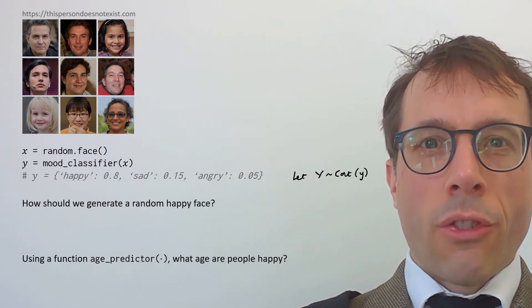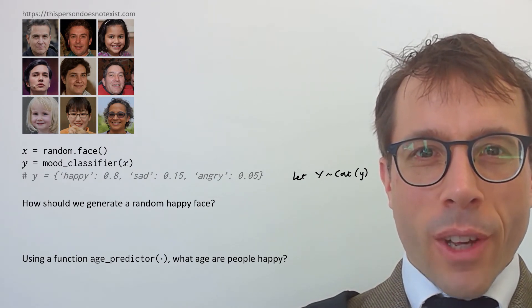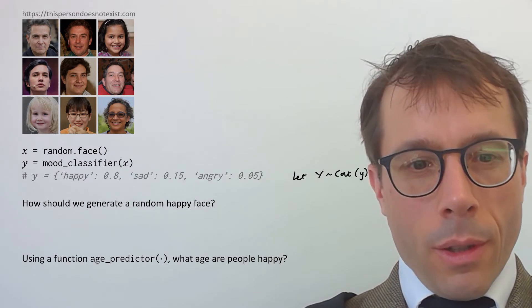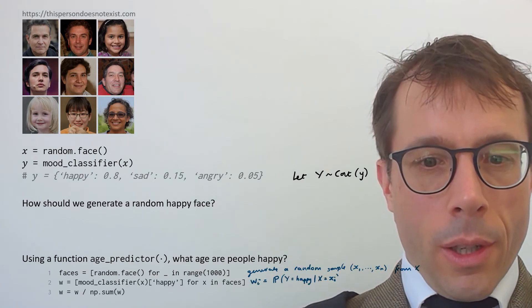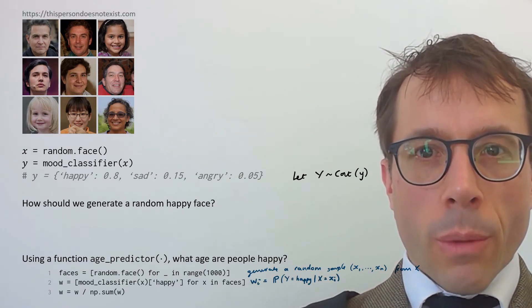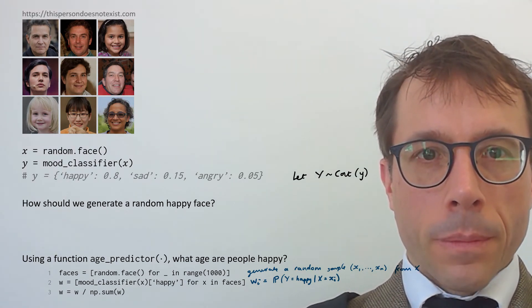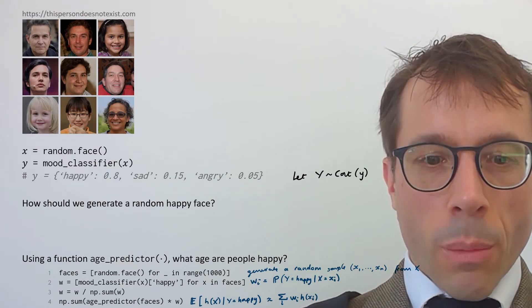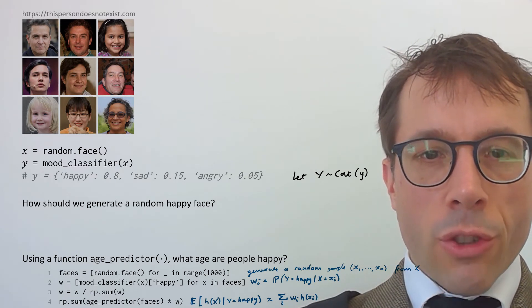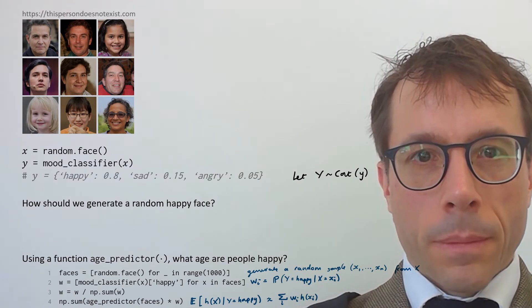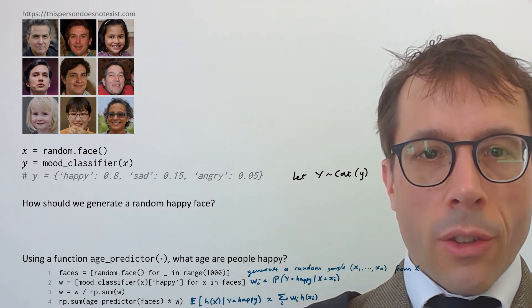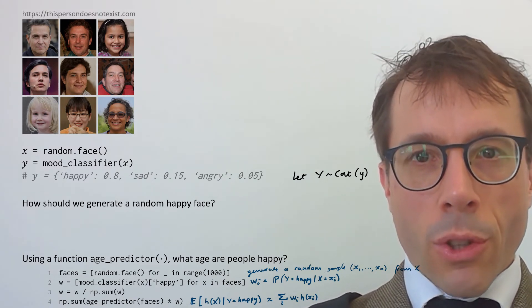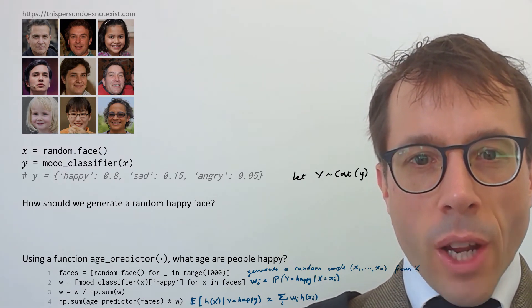Actually, before answering this question, I want to answer a second question. Let's suppose we have a function that predicts the age of a given face, and let's imagine I want to ask, what age are people happy? Here's how we could use computational Bayes. First step, generate a random sample of faces. Next, compute a weight for each face in our sample. The weight should be the likelihood of the outcome y equals happy for a particular face, little xi. Next, the question asks us, what age are people happy? We'll interpret it as find the expected value of the age function h of x, conditional on the outcome y equals happy. And computational Bayes says that we can approximate it by this weighted sum here. Okay, so that's exactly the standard steps we've laid out for any computational Bayes question. All we needed was to be a little bit clever about how to frame the question as an expectation.